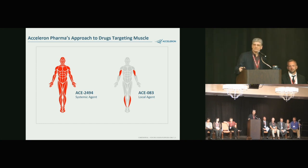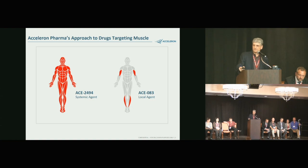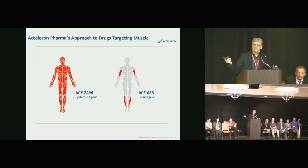They have two drugs in development. ACE-2494 is a systemic therapy given by subcutaneous injection that affects the entire body. Other companies — Pfizer, Novartis, Roche — also have systemic myostatin inhibitors in development. ACE-2494 is currently in Phase 1 in healthy volunteers. Today's presentation focuses on ACE-83, their locally acting muscle drug, which is now in Phase 2 trials after completing Phase 1 in healthy volunteers, published in the June issue of Muscle and Nerve.